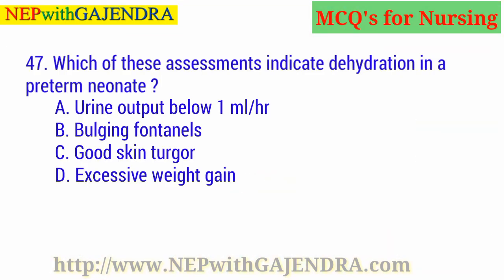Which of these assessments indicates dehydration in a preterm infant? A. Urine output below 1 mL per hour. B. Bulging fontanelles. C. Good skin turgor. D. Excessive weight gain. The right answer is A: Urine output below 1 mL per hour.